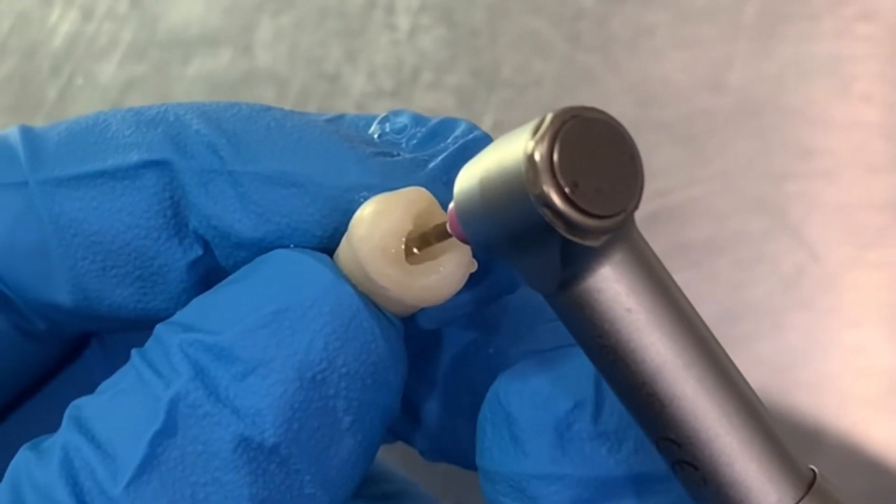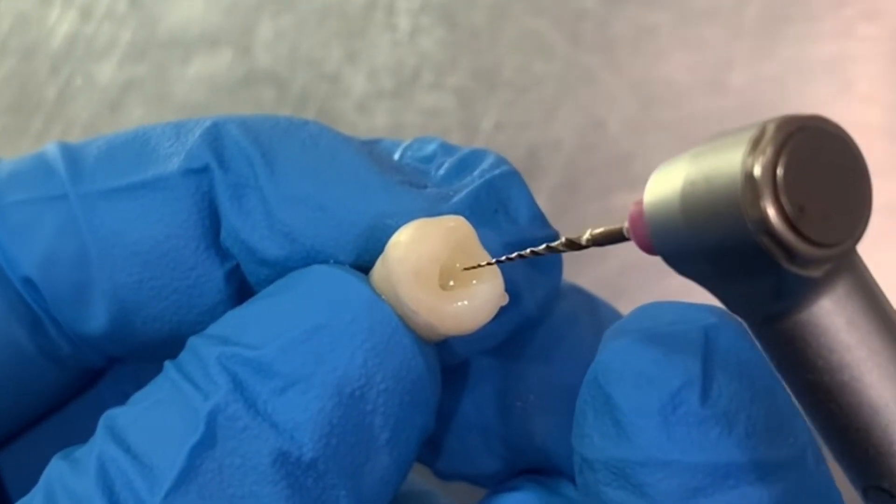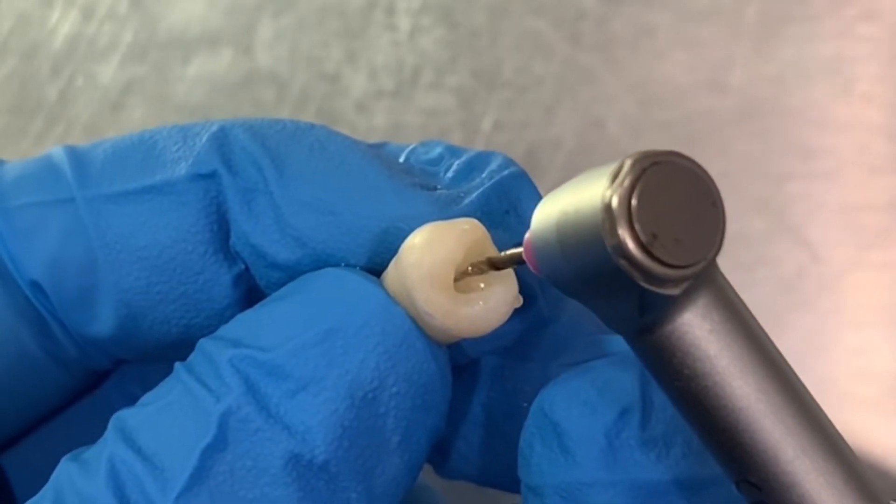The ProTaper S1 file is allowed to passively float into the canal and follow the glide path till the working length.